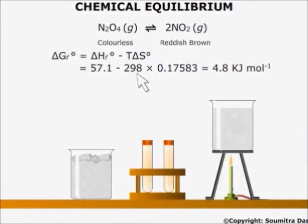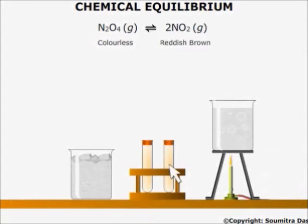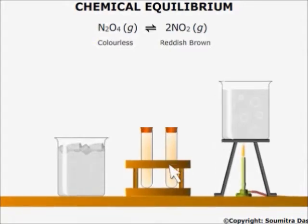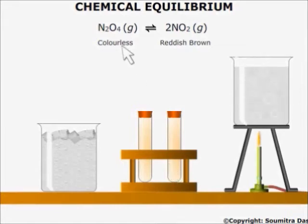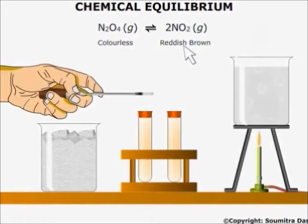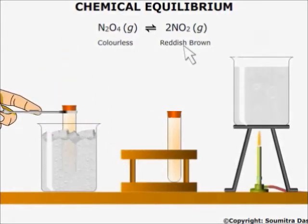That is why NO2 gas collected in a test tube at room temperature is light brown in color, as the equilibrium mixture contains both dinitrogen tetroxide, which is a colorless gas, and NO2, which is reddish brown in color. When this test tube is dipped in ice-cold water, the temperature falls and the ΔG of the forward reaction becomes positive, while the ΔG of the backward reaction becomes negative. So, more N2O4 is formed and the gas in the test tube becomes colorless.